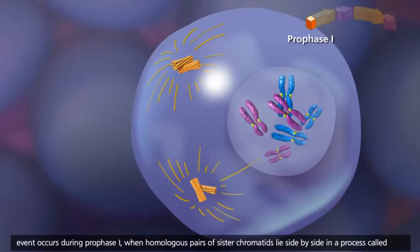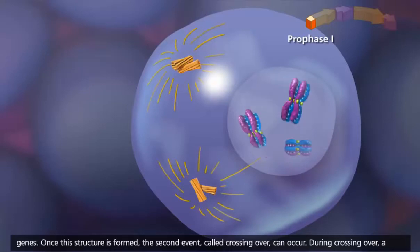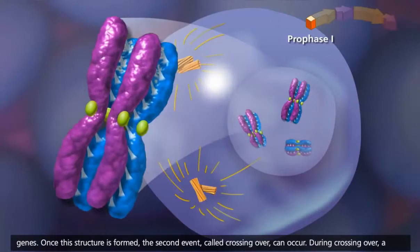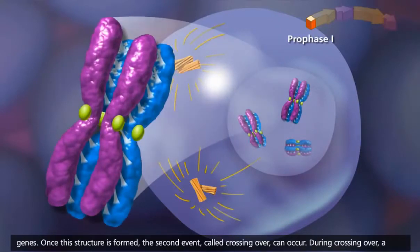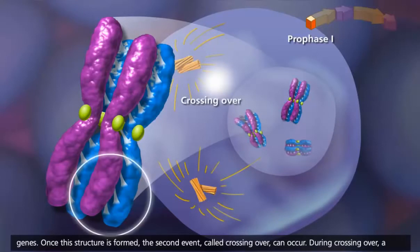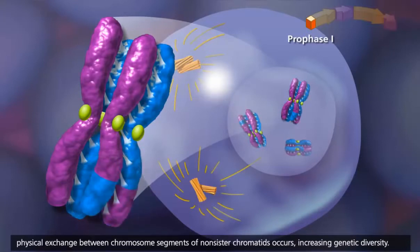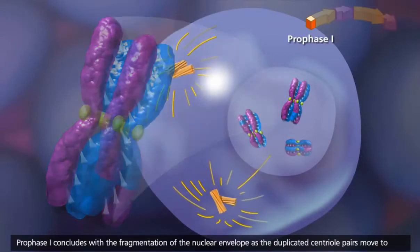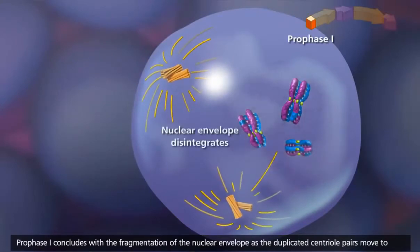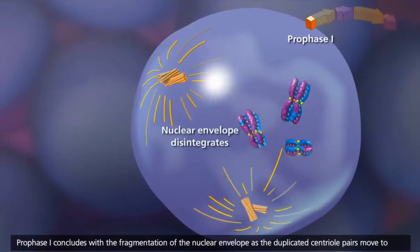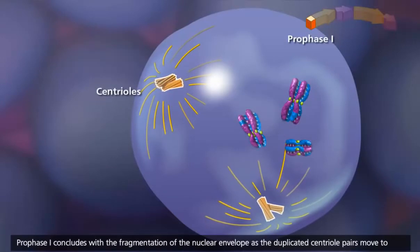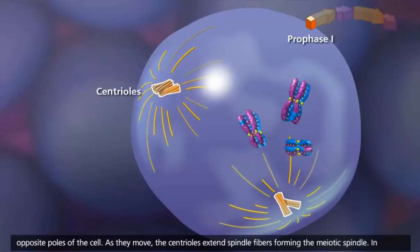The homologous chromosomes share similar, but not necessarily identical, genes. Once this structure is formed, the second event, called crossing over, can occur. During crossing over, a physical exchange between chromosome segments of non-sister chromatids occurs, increasing genetic diversity. Prophase I concludes with the fragmentation of the nuclear envelope as the duplicated centriole pairs move to opposite poles of the cell.